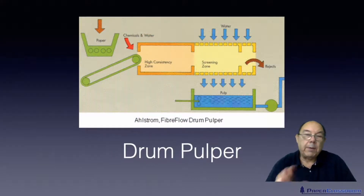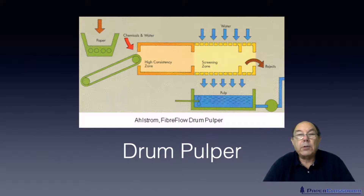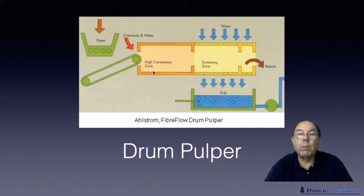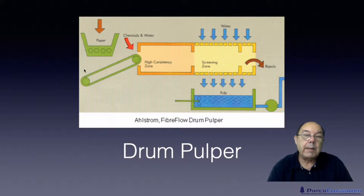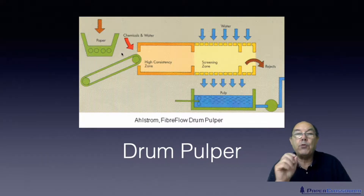That previous ragger junker system is often used for waste material destined to become corrugated packaging. Waste material going to become newsprint often comes through a different type of system - something like a drum pulper. This is a drum pulper set on a very slight angle, just two to four degrees going down.